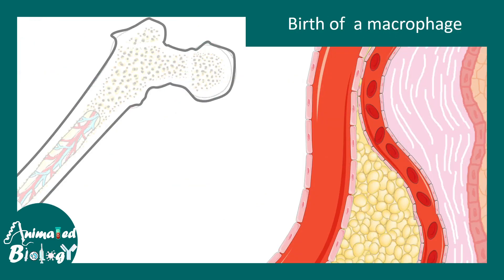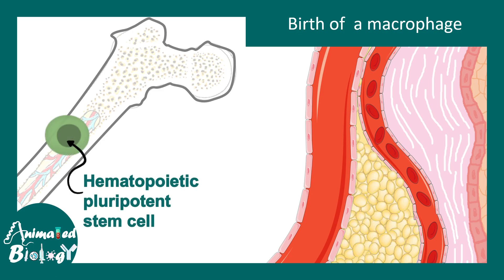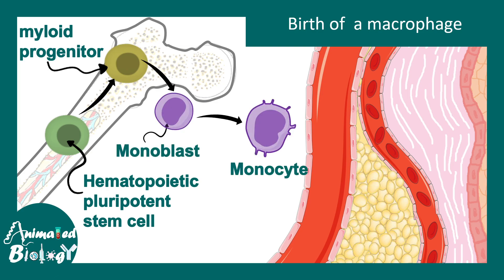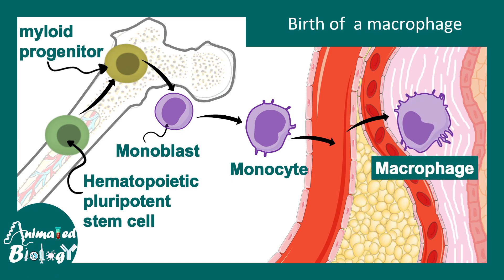Where do macrophages come from? We have to go back to the bone marrow where the hematopoietic pluripotent cells are. These cells give rise to myeloid progenitors, which form monoblasts. Monoblasts give rise to monocytes, and monocytes enter blood circulation. When they exit the blood circulation and are placed in tissue, they differentiate into macrophages, with distinct changes in morphology and overall organelle composition.